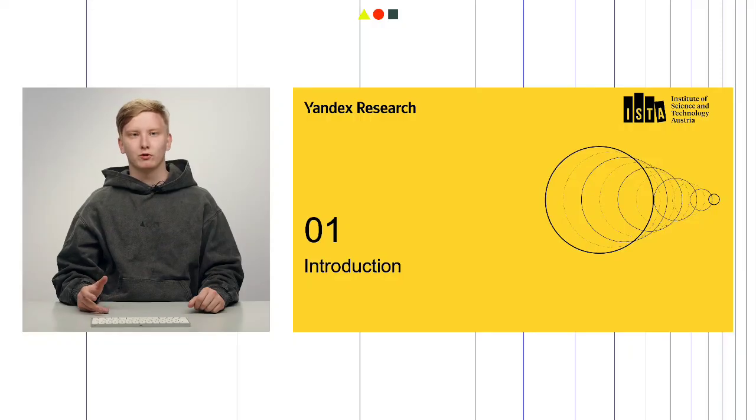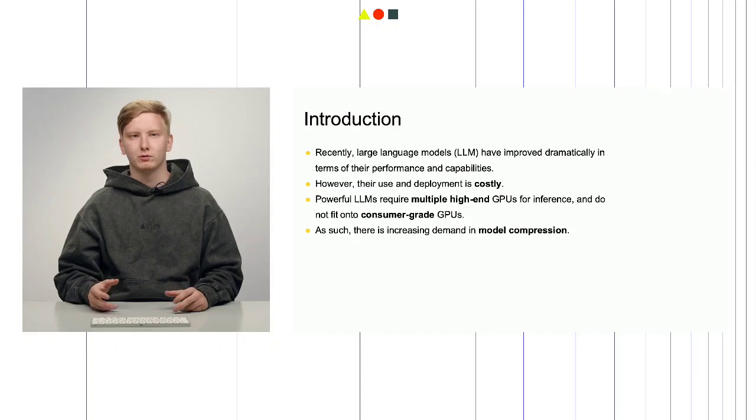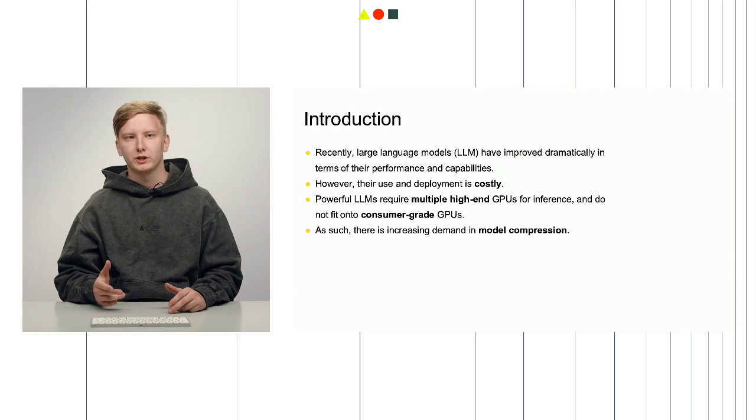This work is aimed at addressing the issue of growing inaccessibility of state-of-the-art large language models by reducing the hardware requirements to run them. Large language models have improved dramatically in terms of their performance and capabilities. However, their use and deployment is costly, as powerful LLMs require multiple high-end GPUs to inference and do not fit into consumer-grade GPUs, effectively locking people out of using them. There exists an increasing demand in model compression, a technique aimed at reducing the hardware requirements of large language models. Model compression mostly aims to reduce models' memory footprint, as LLMs are notorious for their high parameter count. Model size in gigabytes is detrimental to determining whether a workstation can run a certain LLM or not.